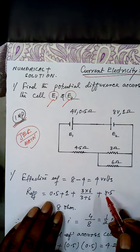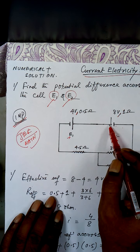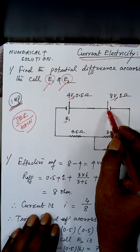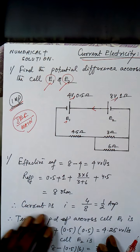This cell is named E1 and the other is named E2. The EMF of E1 is 4V with internal resistance 0.5Ω. The EMF of E2 is 8V with internal resistance 1Ω. The external resistances in the circuit are 4.5Ω, 3Ω, and 6Ω. We need to find the potential difference across each cell.